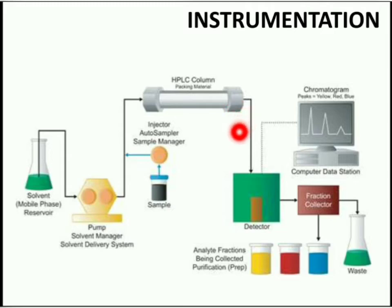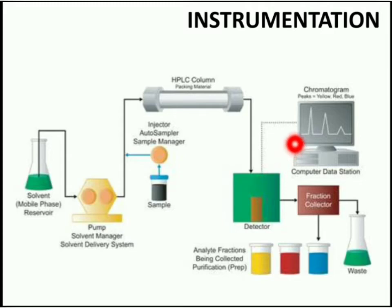After leaving the column, the individual substances are detected by a suitable detector. The recorder system records it, and the display unit displays the graph. The graph is usually in the form of a chromatogram, which allows the identification and quantification of the different substances.